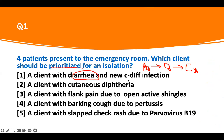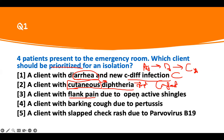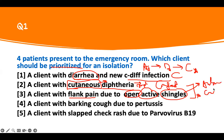A client with diarrhea and C. diff — that's contact. A client with cutaneous diphtheria — pay attention to that buzzword. We know diphtheria is droplet, but when you have cutaneous diphtheria, it changes. It becomes contact precaution. A client with flank pain due to open active shingles — those are all buzzwords I'm highlighting. Open active shingles — if you have shingles that is open, we have two things we have to institute. This is an airborne problem, and there's also a contact problem.